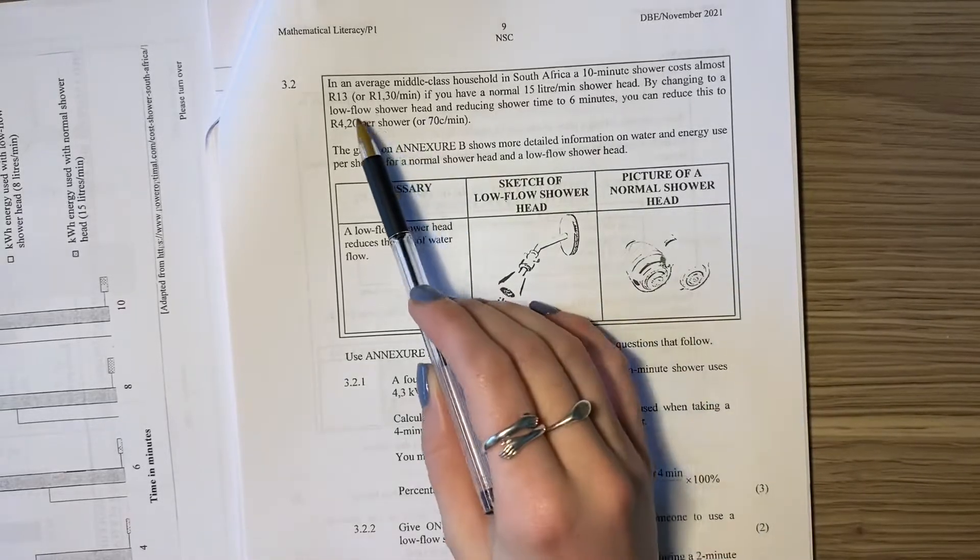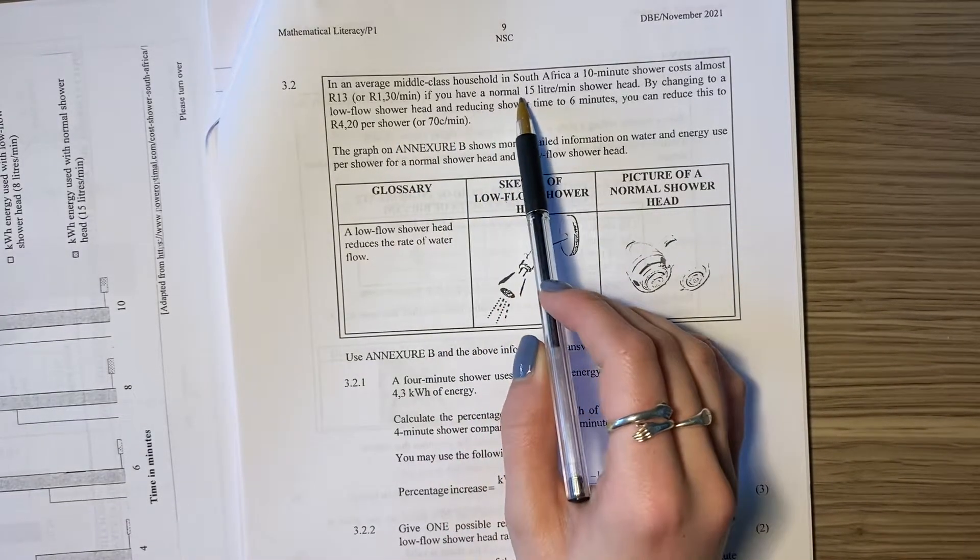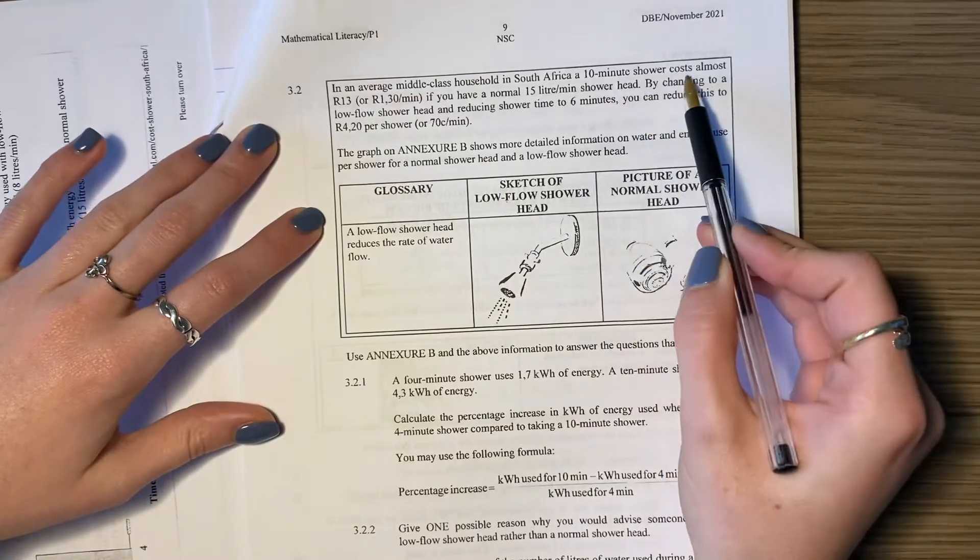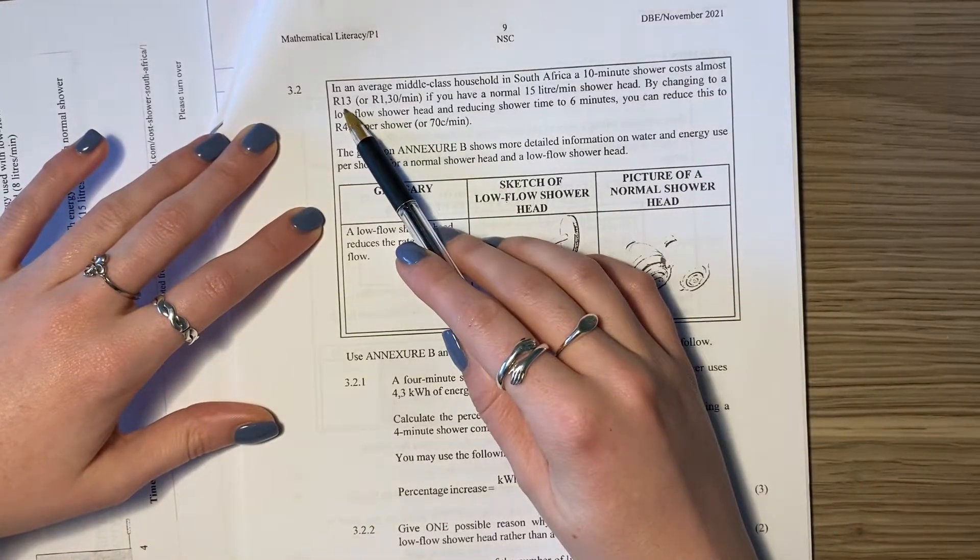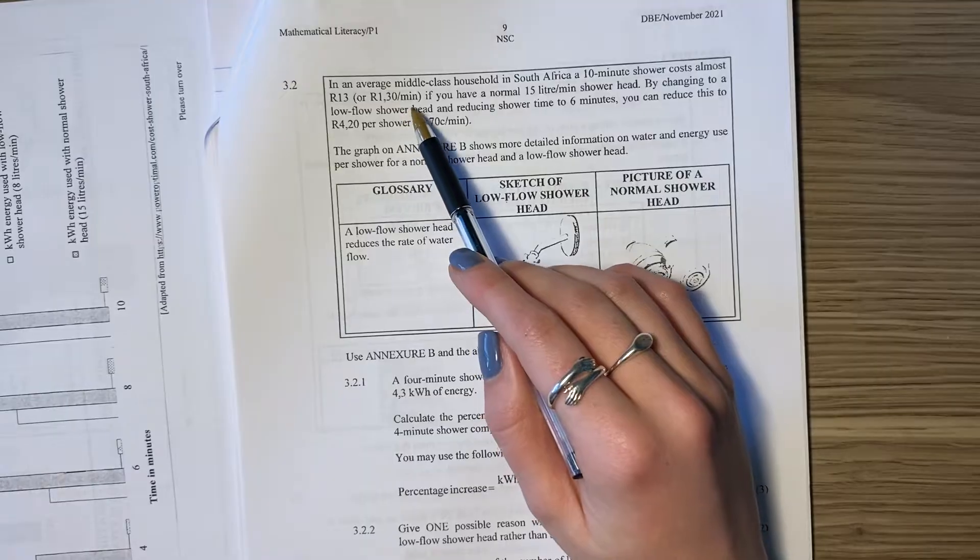Question 3.2. In an average middle-class household in South Africa, a 10-minute shower costs almost 13 rand, or 1.3 rand per minute.